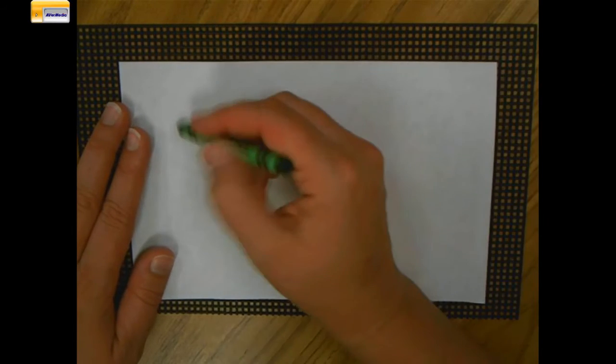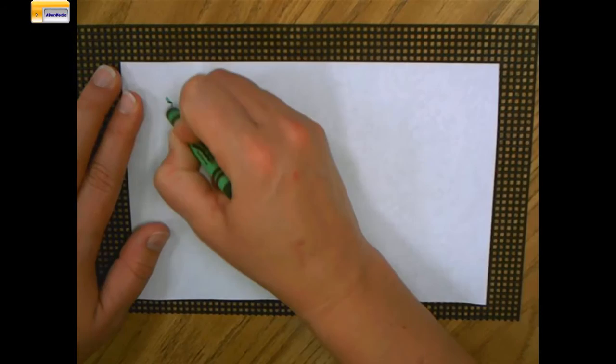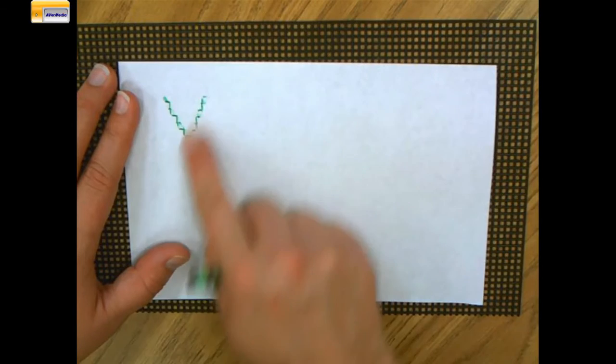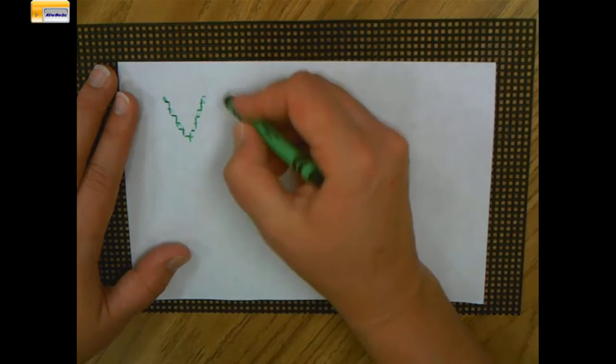I'm going to use two slanted lines. I'm going to go down, up. That's it. V says V. You try it.